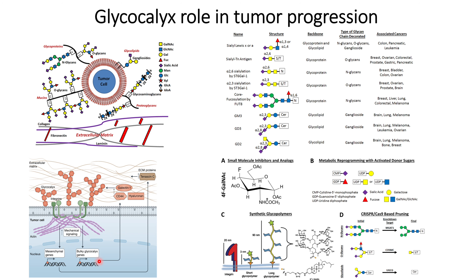Two of the major intracellular signaling activations involve genes responsible for cell transitions, such as mesenchymal genes, and genes that help form a bulkier glycocalyx layer, such as CD44, hyaluronan, and galectin-1. In terms of mesenchymal genes, tenascin-C is upregulated, which helps cells migrate towards metastasis.